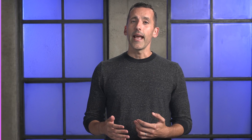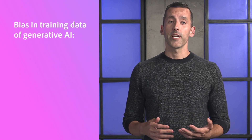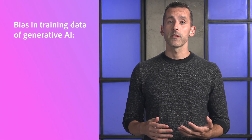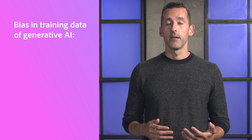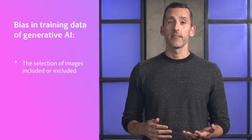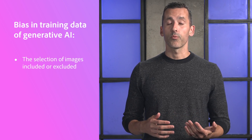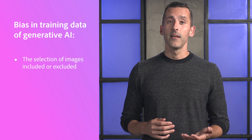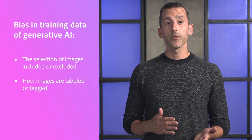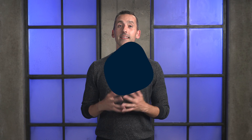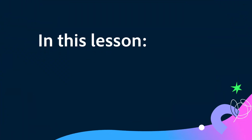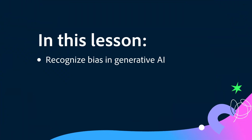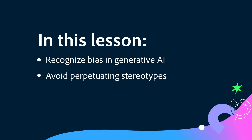Similarly, any bias in the training data of Gen AI models will influence their output. This includes everything from what images were included or excluded from the data set, as well as how the images are labeled or tagged. In this lesson, I'll show you how you can recognize social and Gen AI bias, as well as steps to take to avoid perpetuating harmful stereotypes.